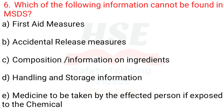Question 6: Which of the following information cannot be found in MSDS? A. First aid measures, B. Accidental release measures, C. Composition/information on ingredients, D. Handling and storage information, E. Medicine to be taken by the affected person if exposed to the chemical.